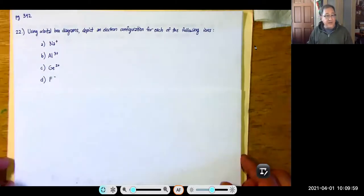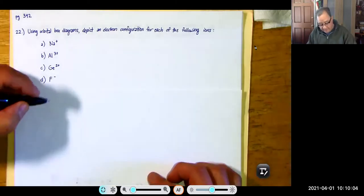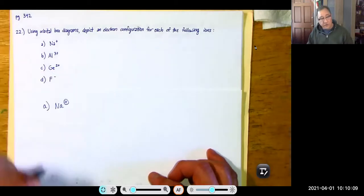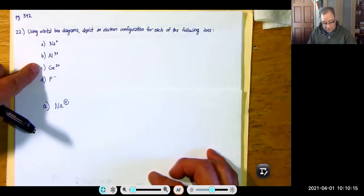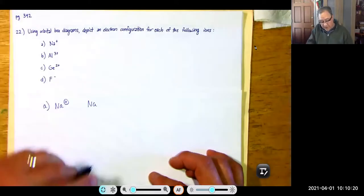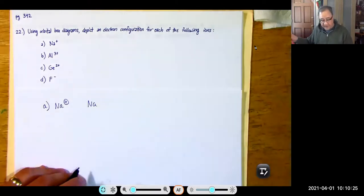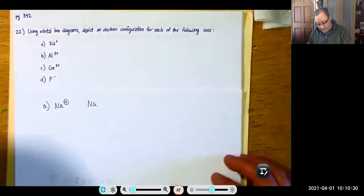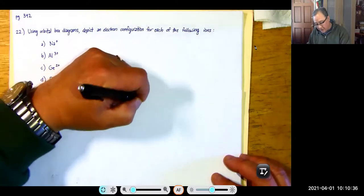Using orbital box diagrams, depict an electron configuration for each of the following ions. For part A, sodium: for each cation, you start off with a neutral atom. A neutral sodium atom has configuration 1S2, 2S2, 2P6, 3S1.